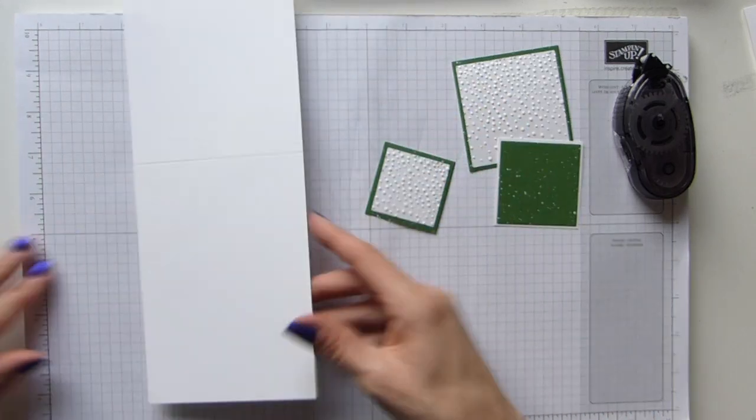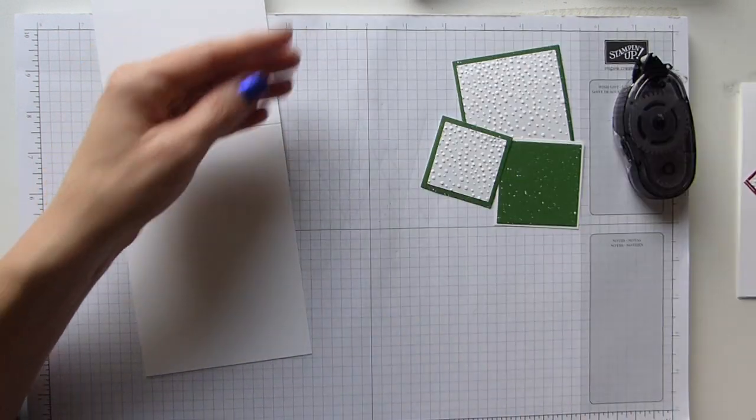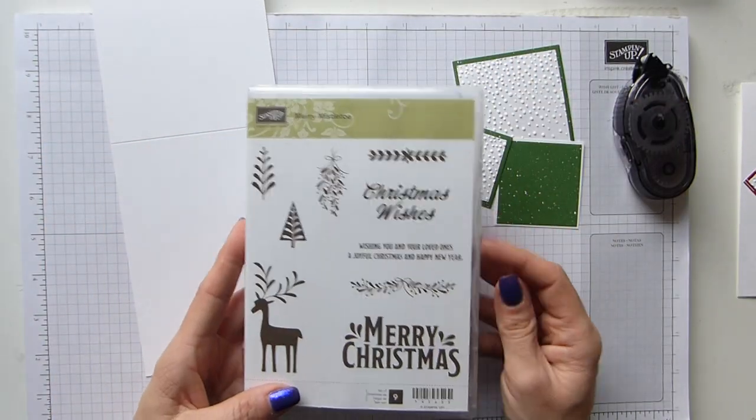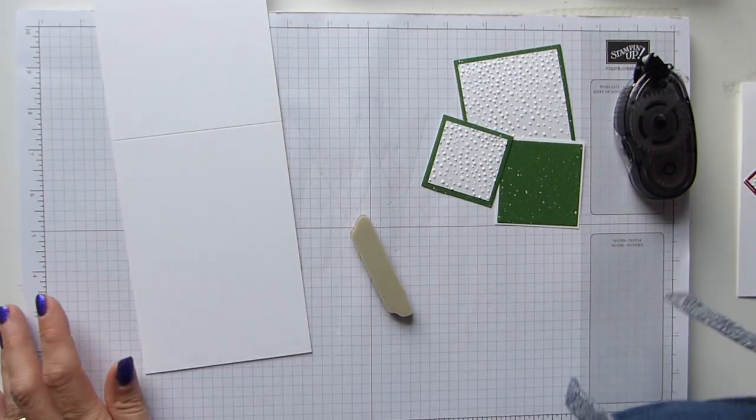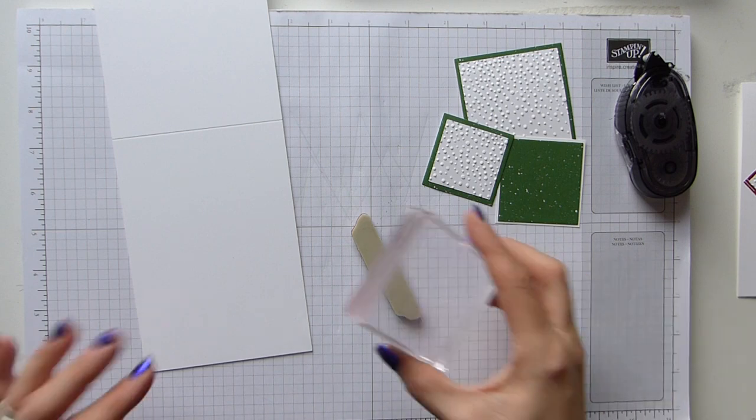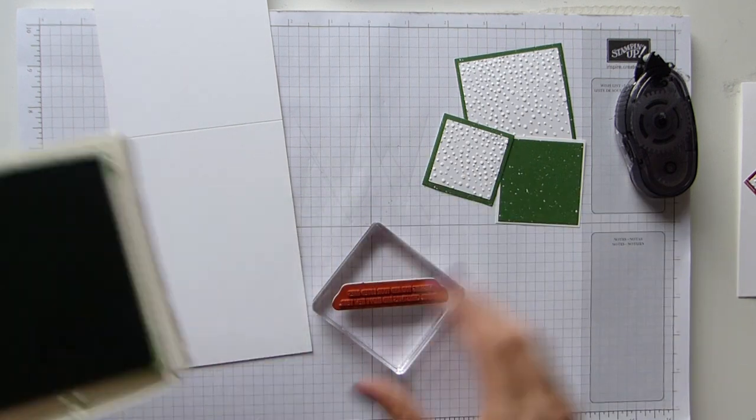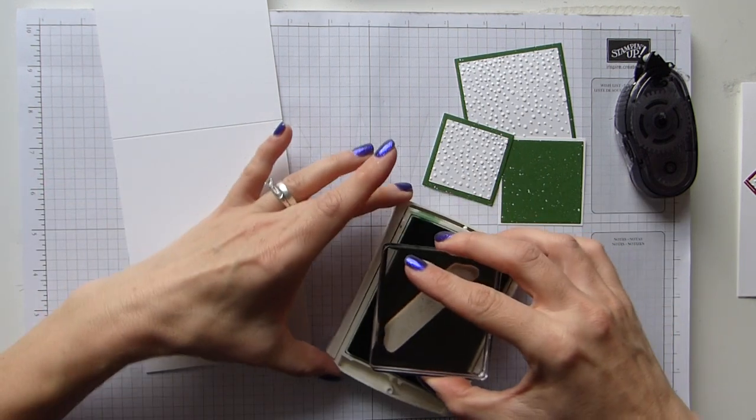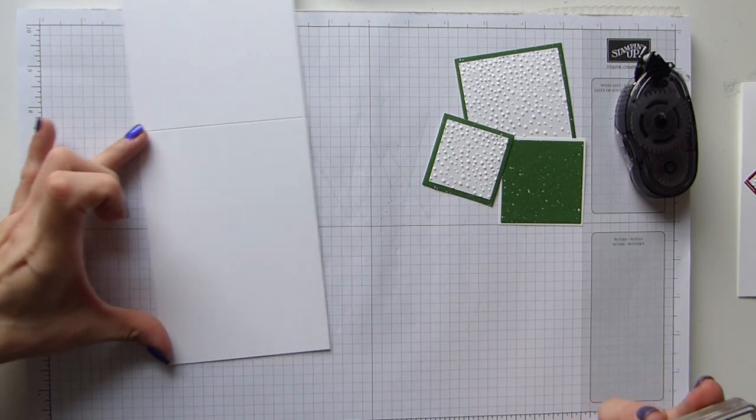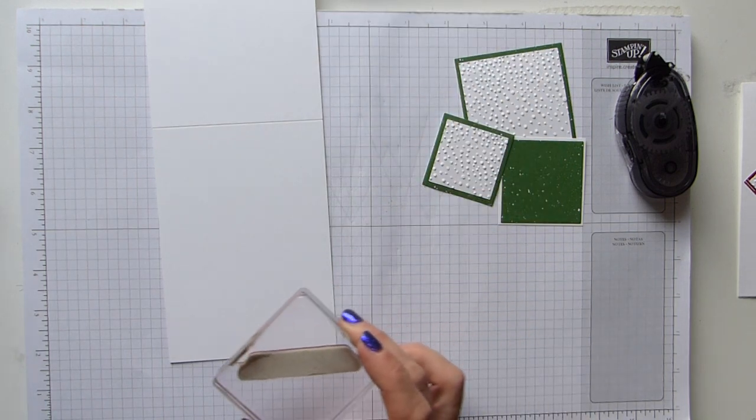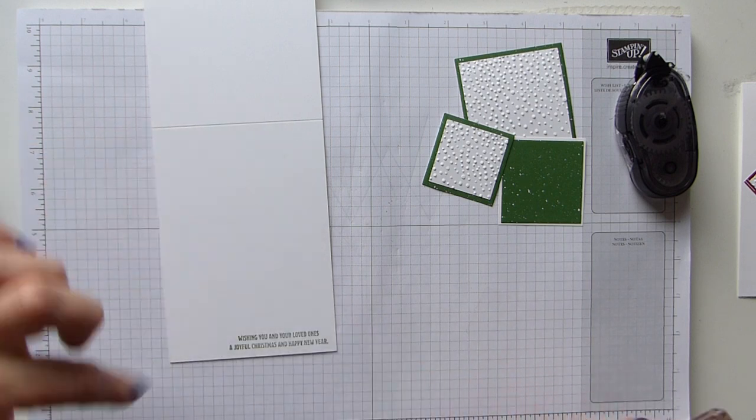So bring in my card base, and the first thing I want to do is stamp my little sentiment here across the bottom. So I've got my Merry Mistletoe and I'm using this lovely long sentiment here. I'm going to grab my D block and my Garden Green, and just making sure I've got it the right way up and no ink on my fingers.